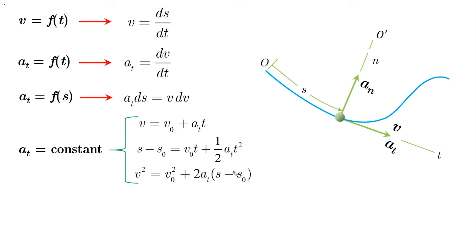In some special cases, the question will ask you to find the radius of curvature. So in this case, you have to start with the definition, which is An equals V squared over rho. And typically V will be given in the problem.